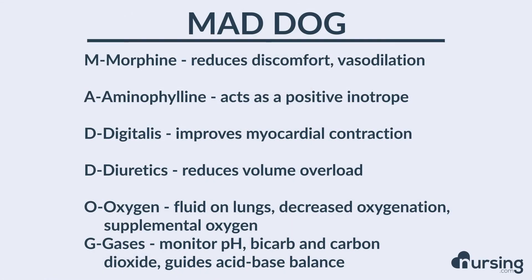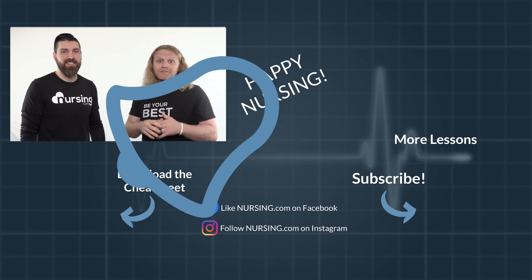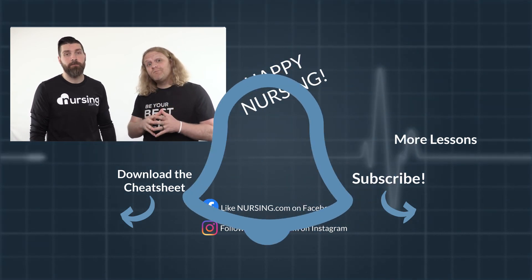G stands for gases. Anytime we have a patient with pulmonary edema, we want to make sure we're monitoring their blood gas levels — that means monitoring their pH, their bicarb, and their carbon dioxide — and that helps to guide our practice when it comes to acid-base balance.